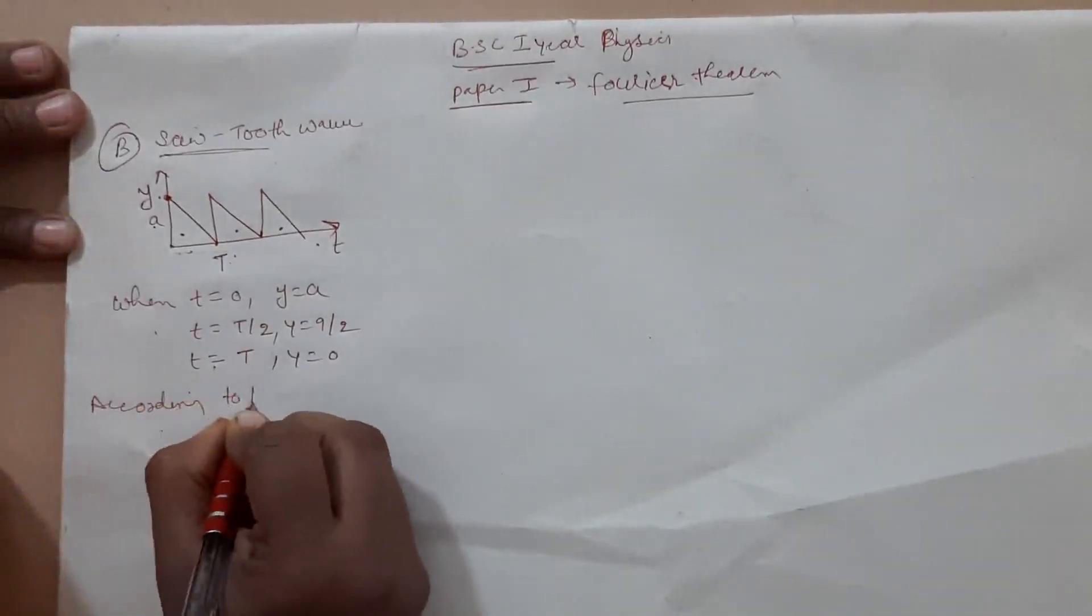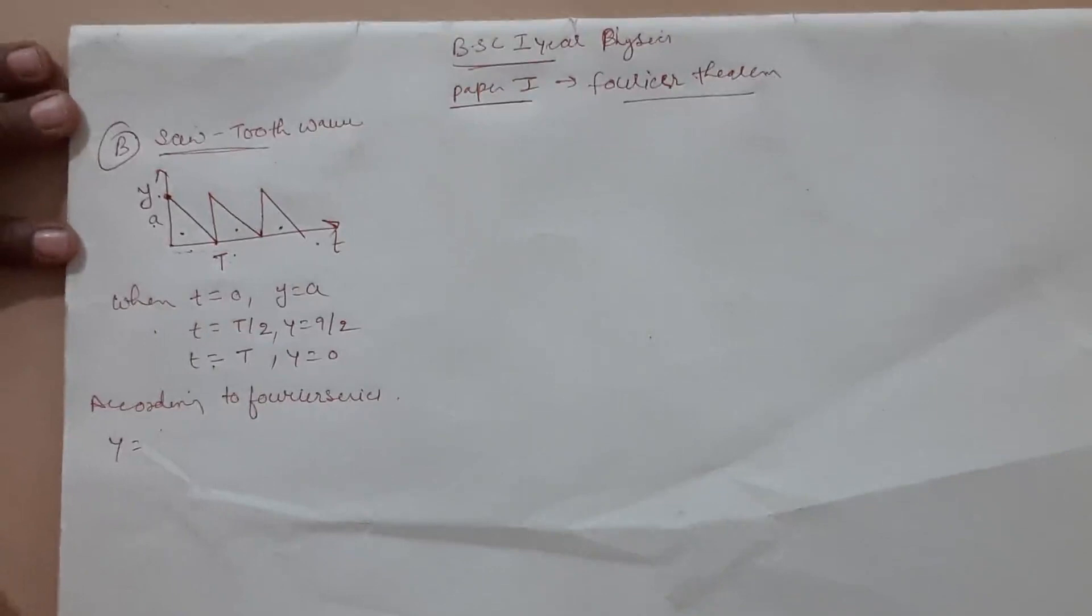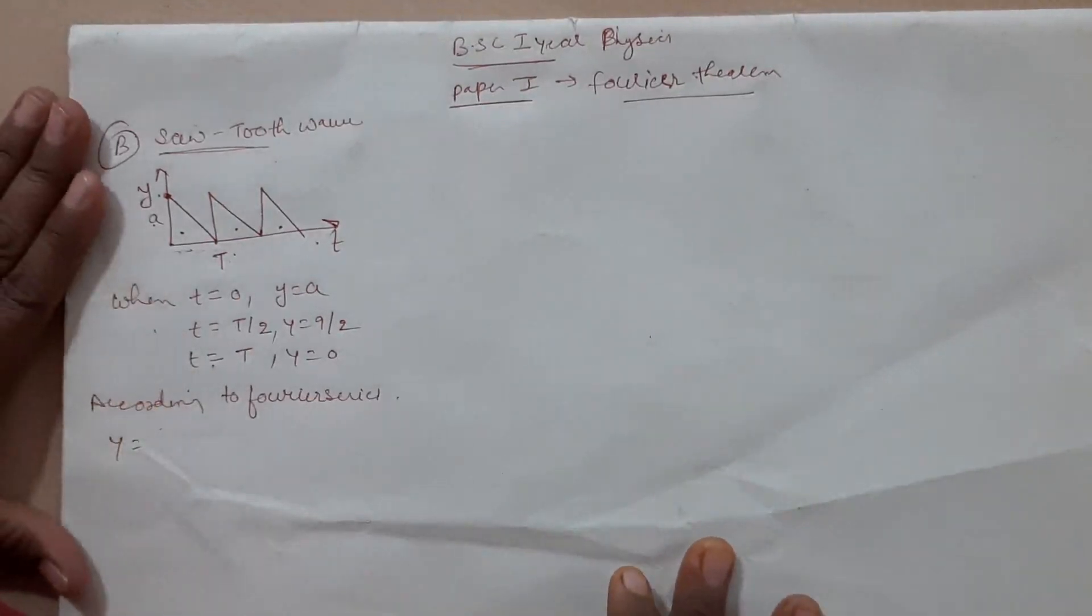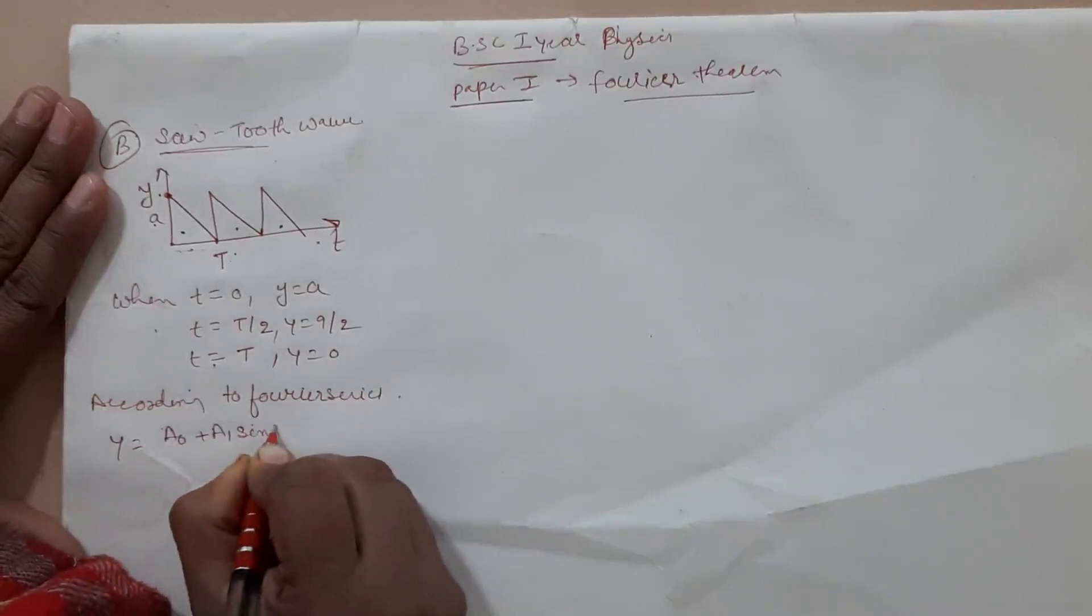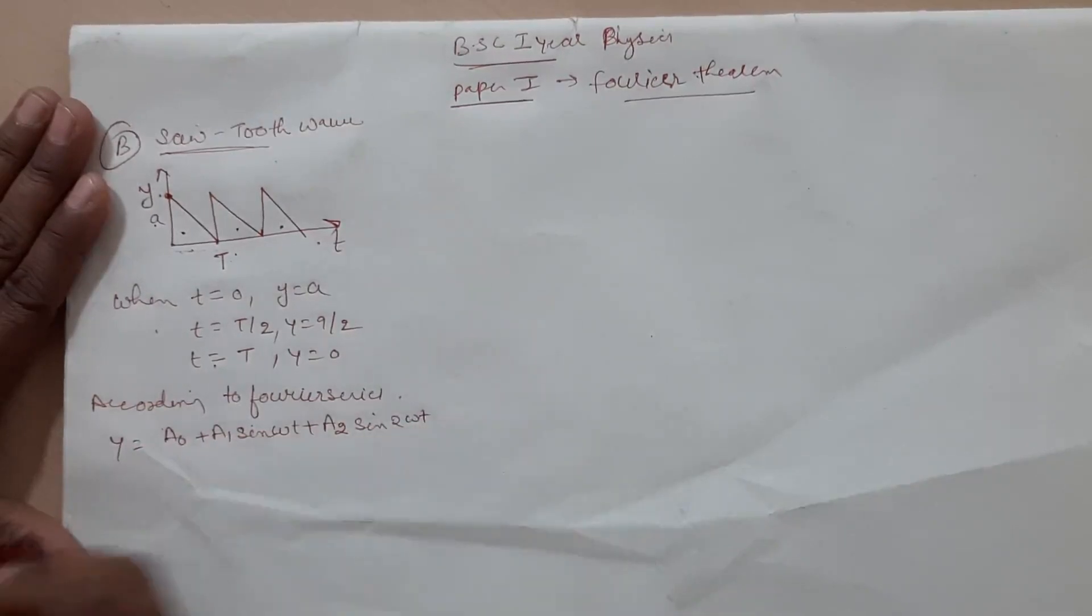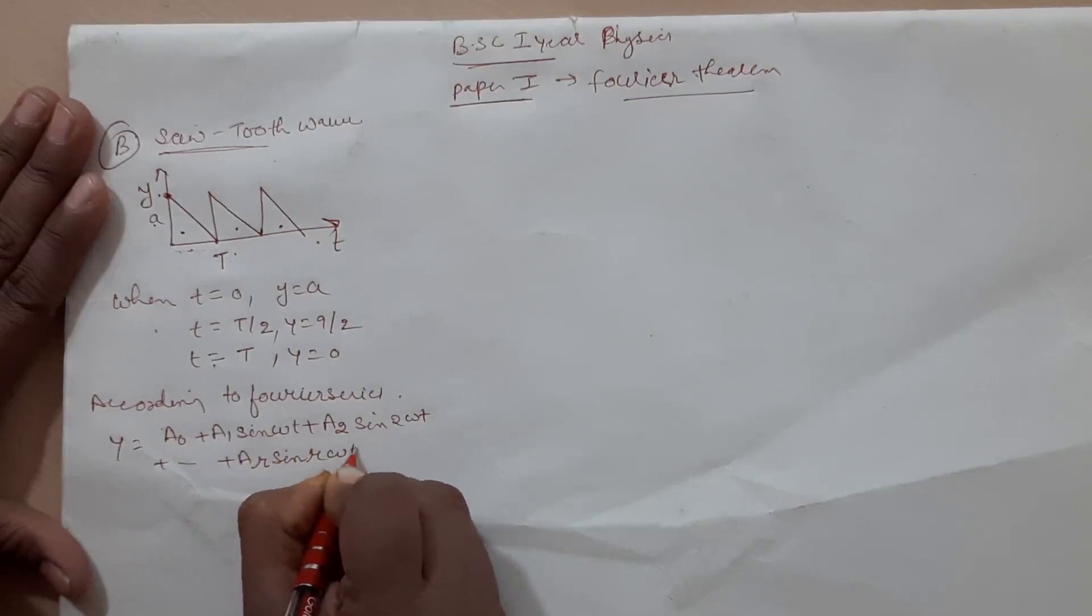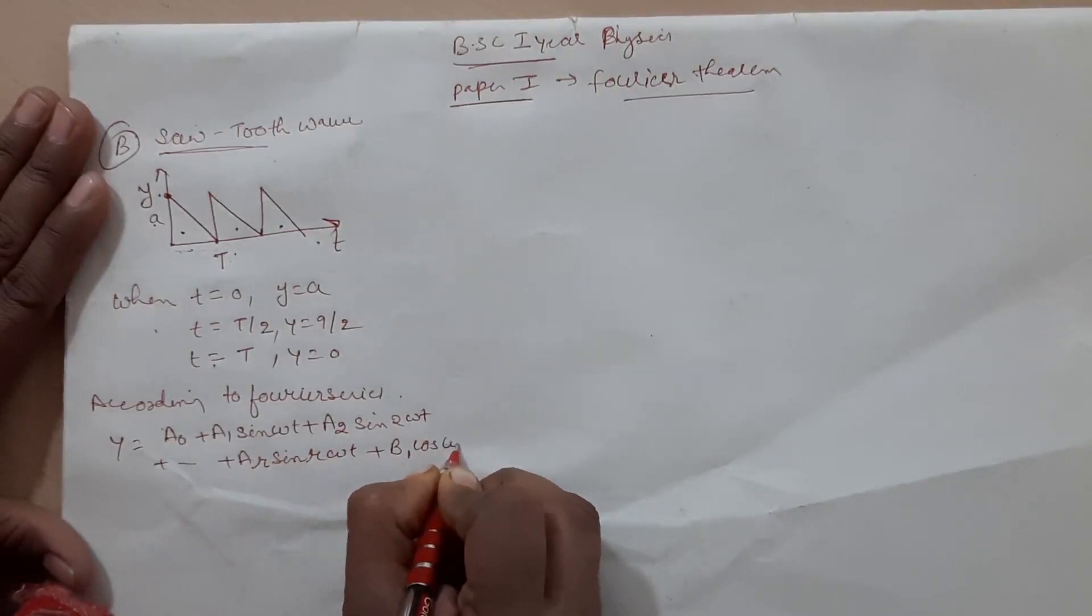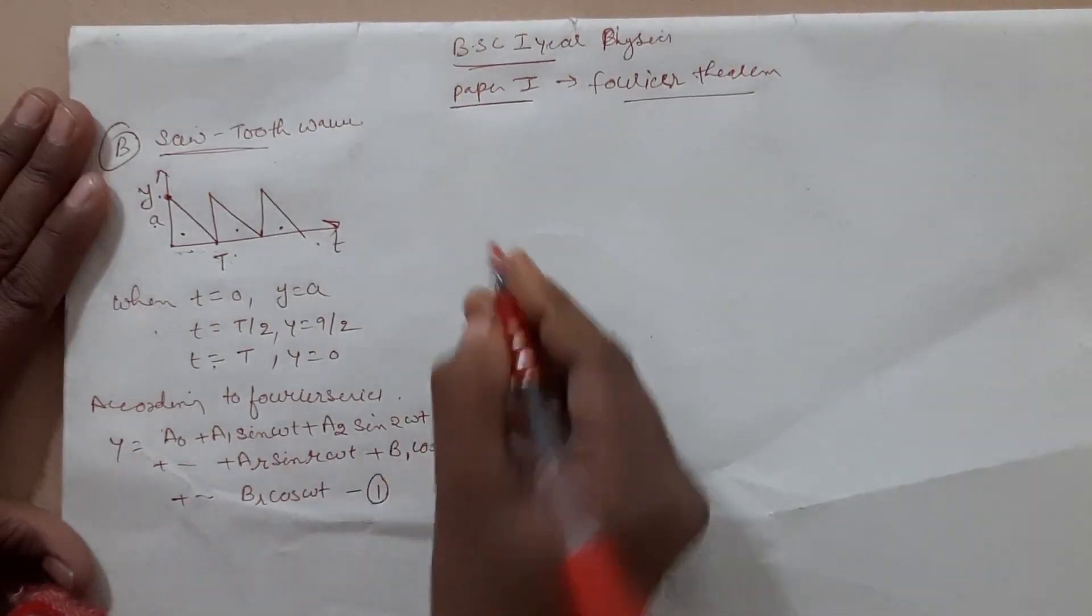Now, according to Fourier series, we have learned Fourier theorem, and on the basis of the theorem, we can solve. So these are the equation: a0 plus a1 sin omega t, a2 sin 2 omega t, plus ar sin r omega t. This is the first component. For the second we will use b1 cos omega t, br cos omega t. This is the first equation.